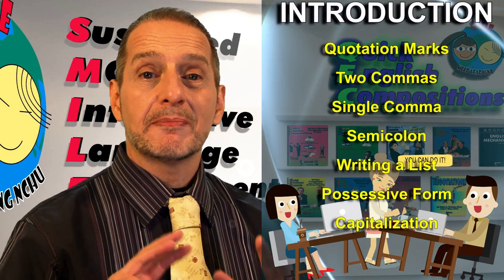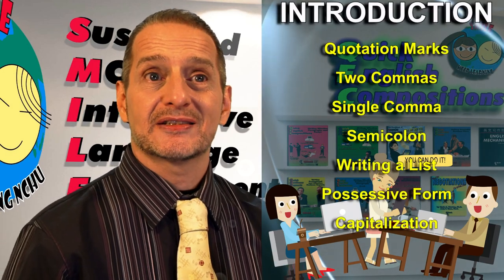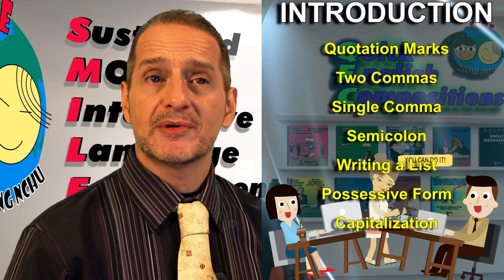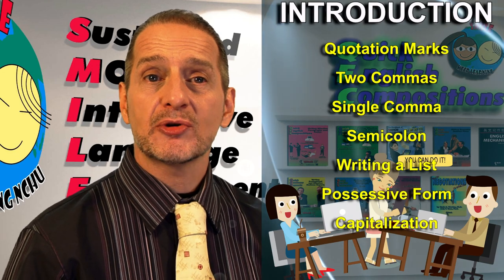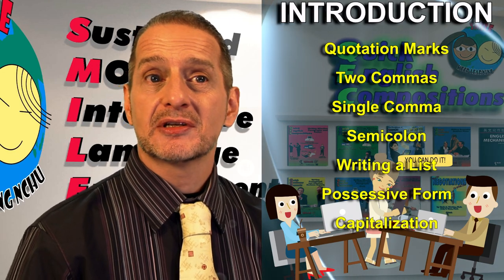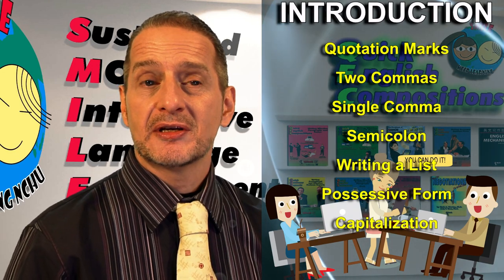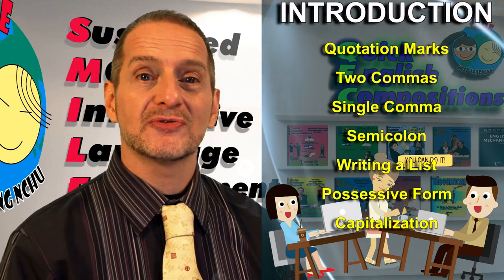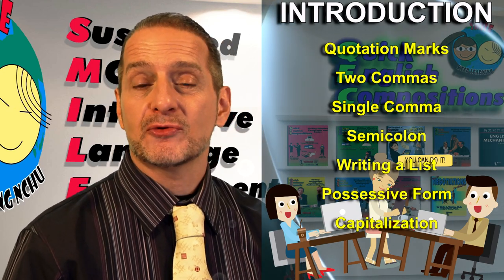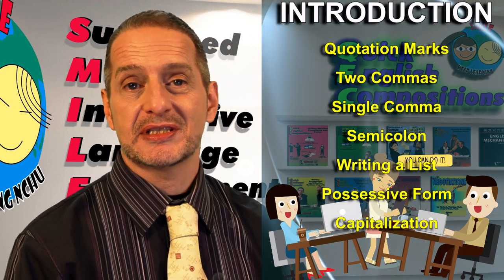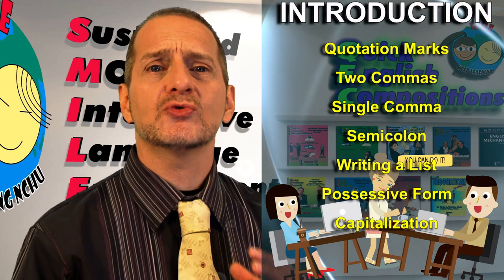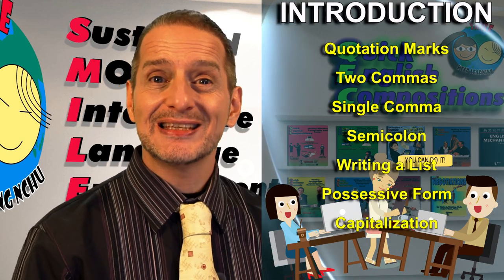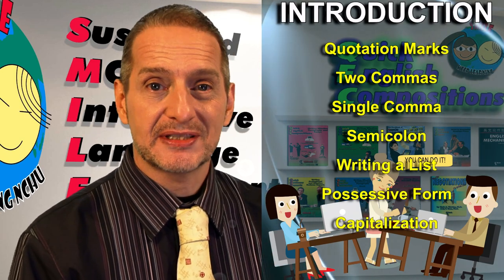In this part we're going to look at the mechanics — things like quotation marks, commas, serial commas. We're going to look at semicolons, possessive form with the apostrophe, and of course capitalization. These are a lot of rules to follow, but it's also the place where it's easy to make a mistake.